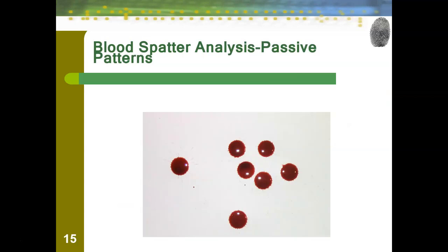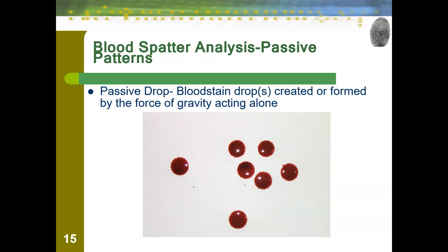Up first, we have our passive patterns. The first passive pattern is the passive drop — bloodstain drops created or formed by the force of gravity acting alone. You can see the spike and satellite here. This might be someone standing there bleeding or holding a knife that blood is dripping off of, but it usually indicates that someone is staying relatively still, hence passive.